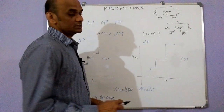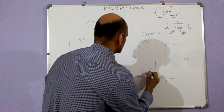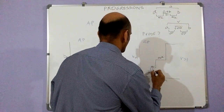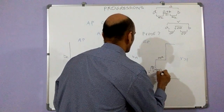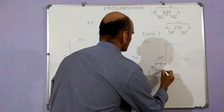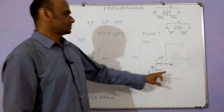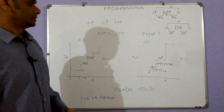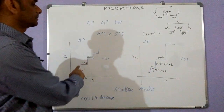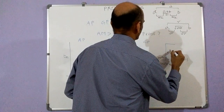Similarly, if we draw this plot for a geometric progression — value of the term versus the term number — the first term is a, the second term is ar, and the third term is ar squared. The step sizes are a(r − 1) and then ar(r − 1). If we call the first step size d, then the next step size is r times d. Since r is greater than 1, the step sizes are increasing — the next step size is r squared times d — unlike arithmetic progression where the step size is uniform.